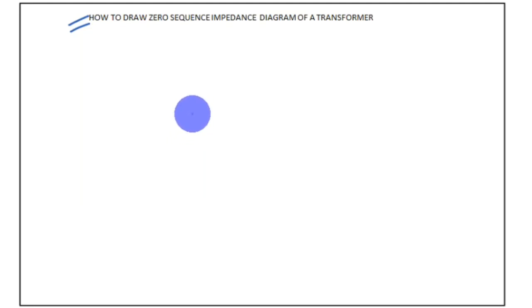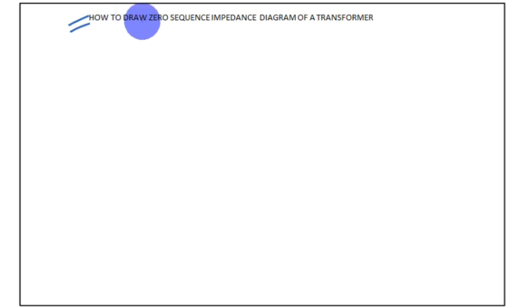Welcome back to our channel, Electrical Technology and Industrial Practice. Today our topic is how to draw the zero sequence impedance diagram of a transformer. The zero sequence impedance diagram is necessary because it lets you know how the earth fault current flows during an earth fault.